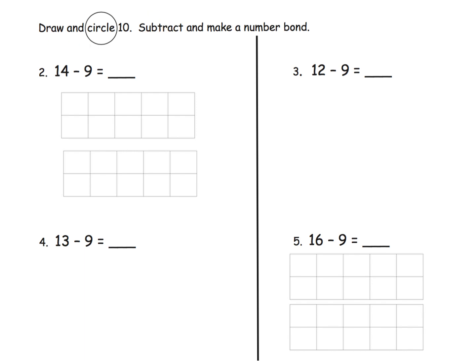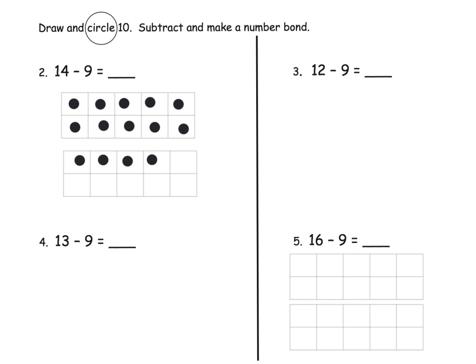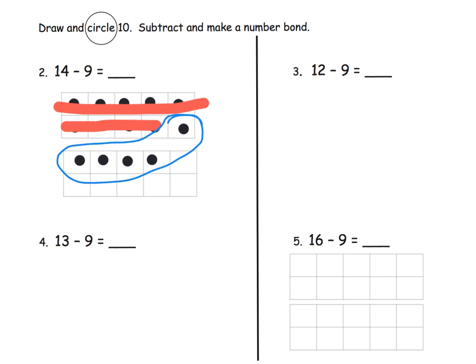This is more of the same but in a slightly different format — we're drawing the 14 ourselves. Here is 10 and then 1, 2, 3, 4. I prefer to put things in 10-frames because students are less likely to miscount. Eureka Math has students draw in a long line in groups of 5, but I prefer 10-frames. Now we subtract 9: that's all 5 of the top row and 4 down here, so our answer is these 4 plus 1, which is 5.